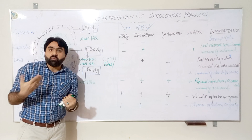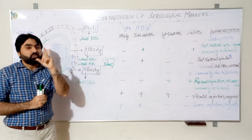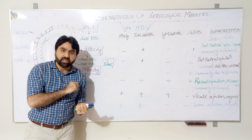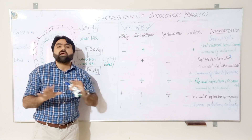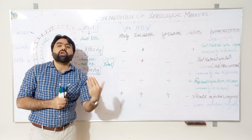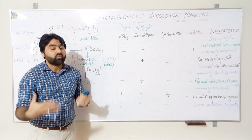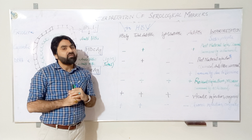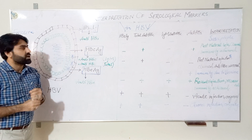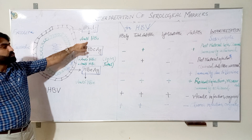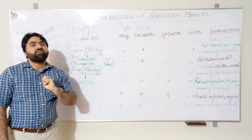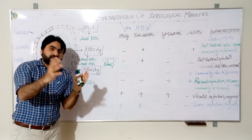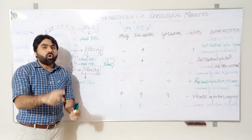Anti-HBs is only produced in acute infection of hepatitis B virus and is not produced in chronic infection. Therefore, the presence of anti-HBs always indicates either a recovered or resolved acute infection, or it indicates vaccination.